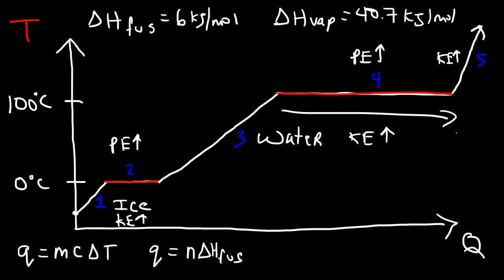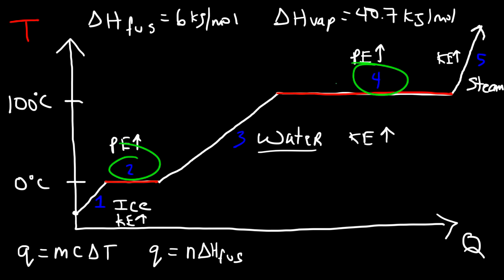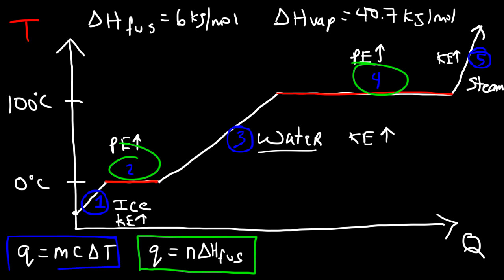Going in this direction, liquid water is vaporizing into steam. Segment five is steam, whereas segment three is liquid water. For segments two and four where phase changes occur, use Q equals n times the enthalpy. For segments one, three, and five where there's a temperature change, use Q equals mc delta T. If you want to find the total heat energy required to go from ice all the way to steam, add up the five Q values for each segment.